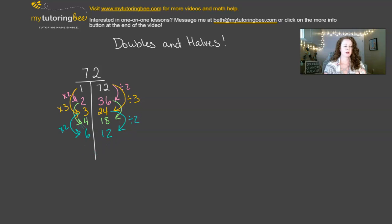And then for the last one, I'm going to double 4, which is 8, and then half its partner. So divide 18 by 2, which is 9. So there, we have all the factors for 72.